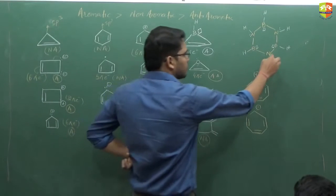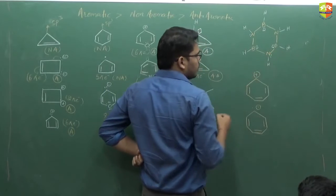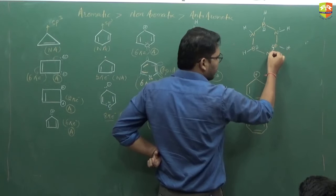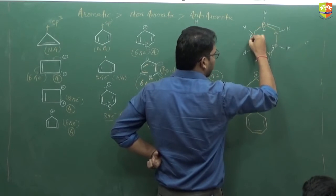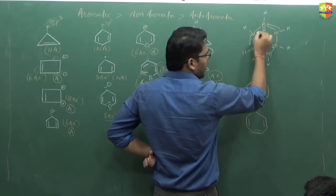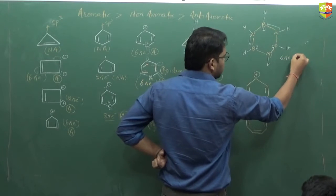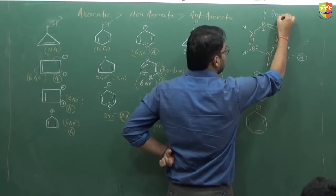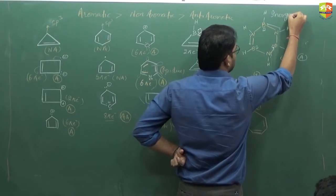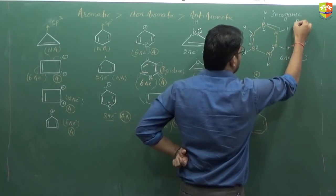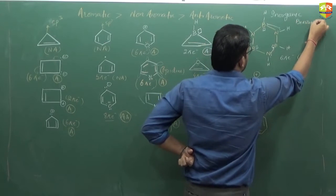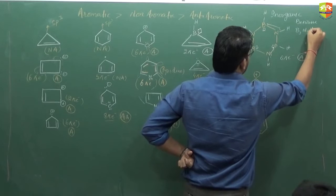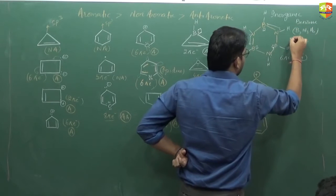How many pi electrons we have here? This lone pair can form a pi bond, because of vacant orbitals it can donate into the vacant orbitals. We have 3 pi bonds here, so it is 6 pi electrons and it is aromatic. This compound we call it as inorganic benzene, formula is B3N3H6, we also call it as borazole.